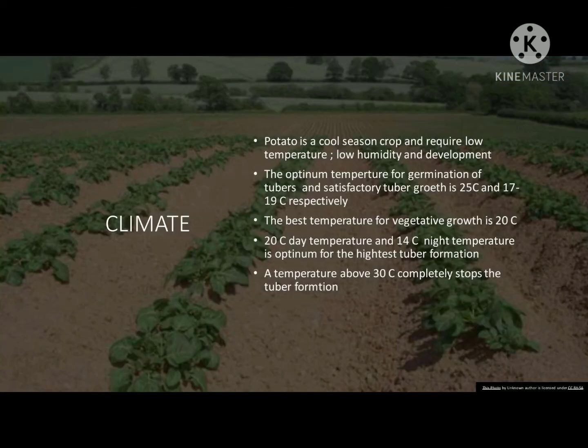Potato is a cool season crop and requires low temperature and low humidity for development. The optimum temperature for germination of tuber and satisfactory tuber growth is 25 degrees Celsius. The best temperature for vegetative growth is 20 degrees Celsius. A 20 degrees day temperature and 14 degrees night temperature is optimum for highest tuber formation. Temperature above 30 degrees causes tuber formation to stop.